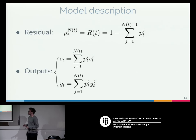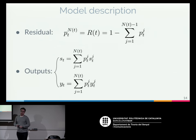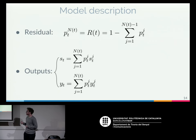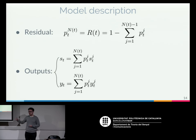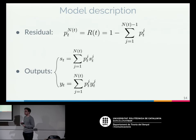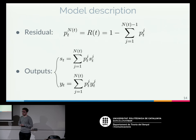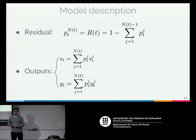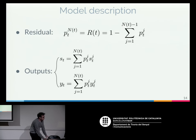We then define the residual, which is 1 minus all the probabilities except the last one, and we redefine the last probability to be the residual. With that we get a probability distribution where the probabilities sum to 1. The outputs are defined as weighted sums of the outputs at each step.